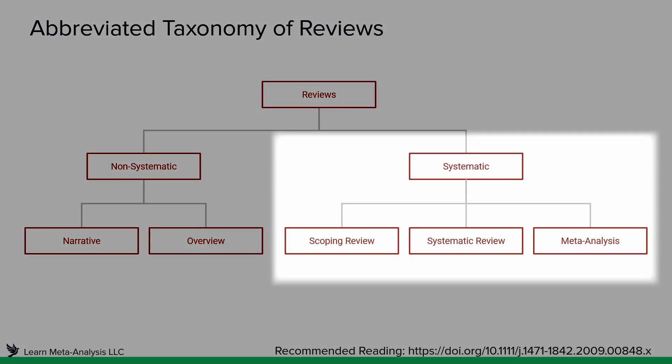On the other side, we have this cluster called systematic reviews. The confusing thing is that systematic reviews refers both to the methods used, but it is also a specific type. So we have scoping reviews, we have systematic reviews, and we also have meta-analysis. And within each of these, of course, there's more that drops down, but since it's just an introduction, we're going to focus on these for now.